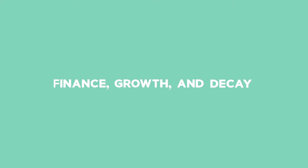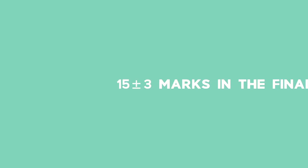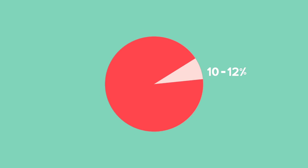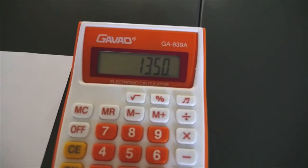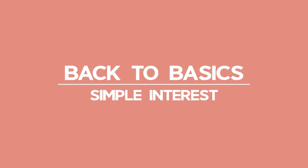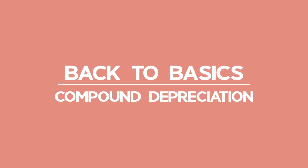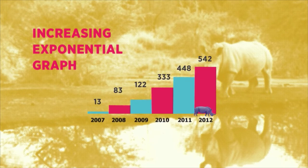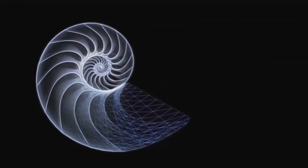Finance growth and decay are roughly 15 plus 3 marks in the final exam, which is 10 to 12 percent of Maths Paper 1. In preparation for your exams, make sure to watch all of the Financial Maths Back to Basics videos and attempt all of the assessment questions at the end of the lesson.